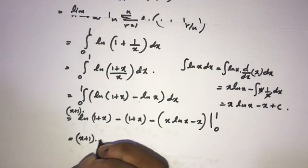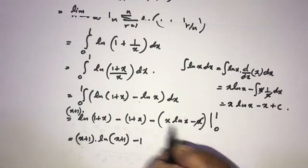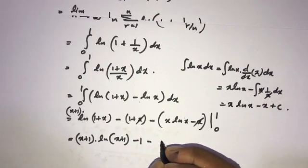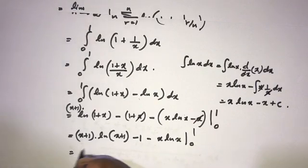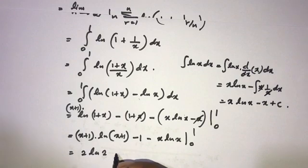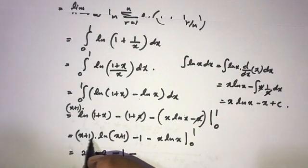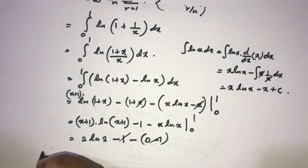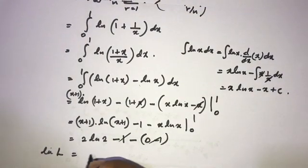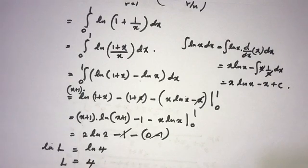Simplifying, we have x plus 1 times natural log of x plus 1 minus x times natural log of x, evaluated from 0 to 1. Substituting x equals 1: 2 times natural log of 2 minus 0. Substituting x equals 0: all terms go to 0. So natural log of L equals natural log of 2 squared, which equals natural log of 4. Therefore L equals 4, and that is our final answer.